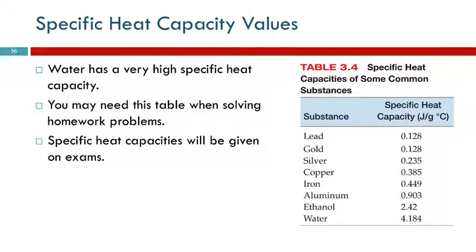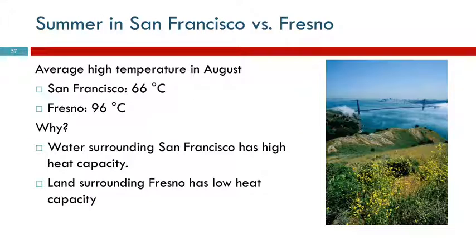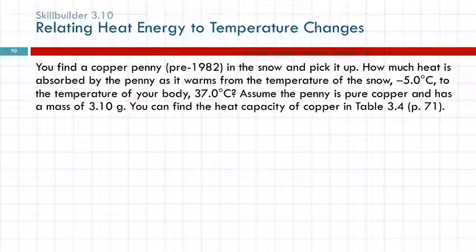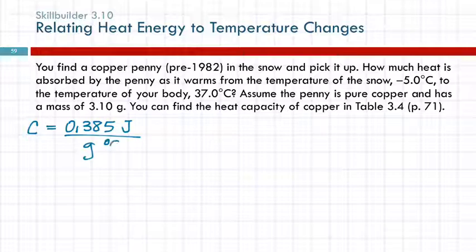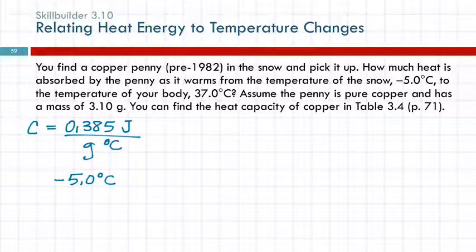I've got that right back here, table 3.4. We're going to need the heat capacity of copper — 0.385. The heat capacity of copper, that's capital C, is 0.385 joules per gram degree Celsius. And then let's pull out those other numbers: we've got minus 5.0 degrees Celsius, 37.0 degrees Celsius, and 3.10 grams.